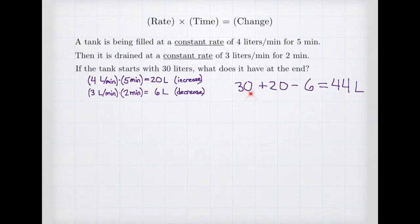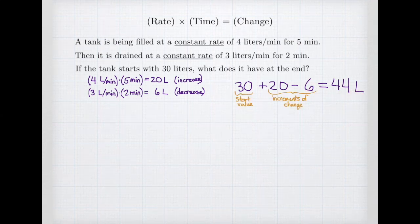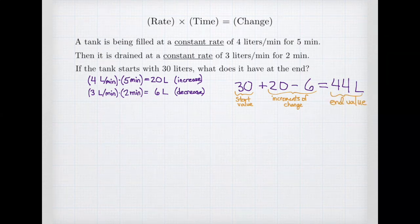We started with our initial value of 30 liters, we added how much it changed during the first 5 minutes, and then we subtracted the amount it changed in the last 2 minutes, and that gave us our total. So we have this idea that we take our starting value, we add our increments of change, and that gives us our ending value.